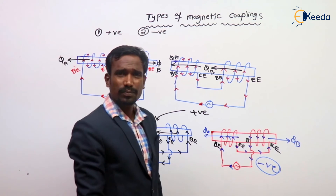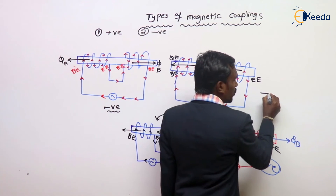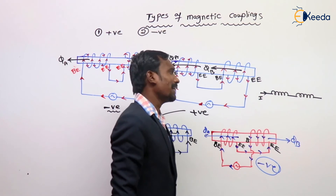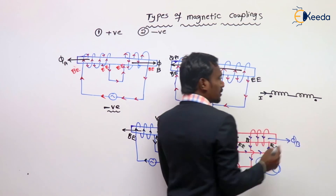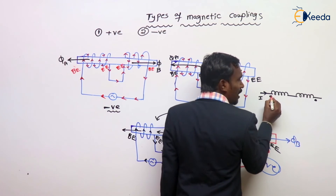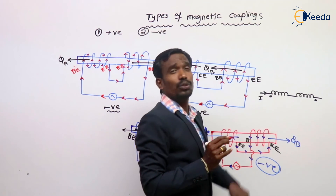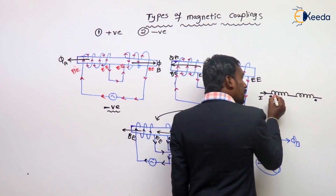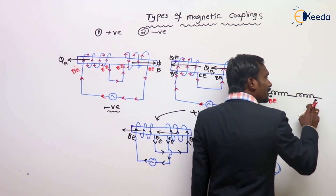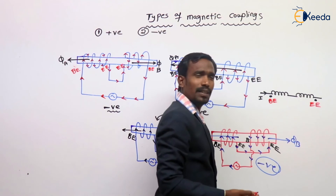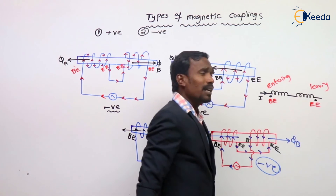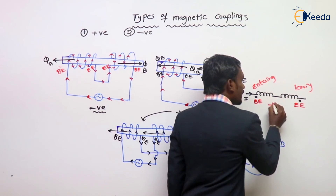Based on dot notation — for example, if my current direction is like this and I give two dots like this, tell me: is this a positive or negative magnetic coupling? At this dot, the current enters to the winding — entering, nothing but this is the beginning end, the dot is at the beginning end. Here, the dot is at the ending end. Current is entering here, but here the current is leaving. So this is a negative magnetic coupling.